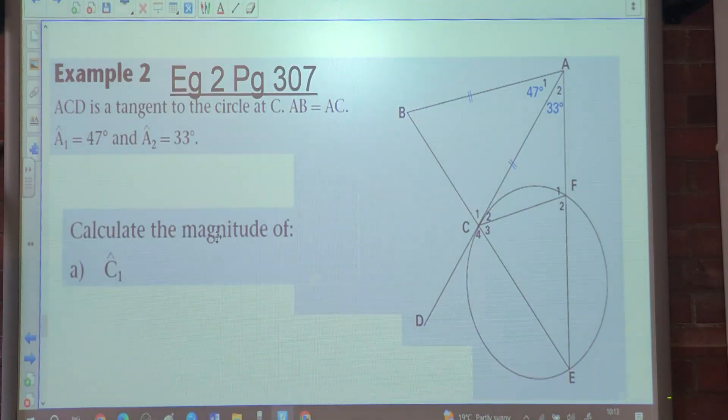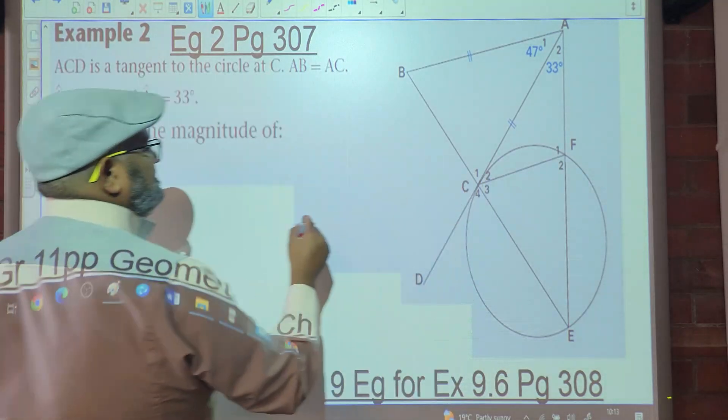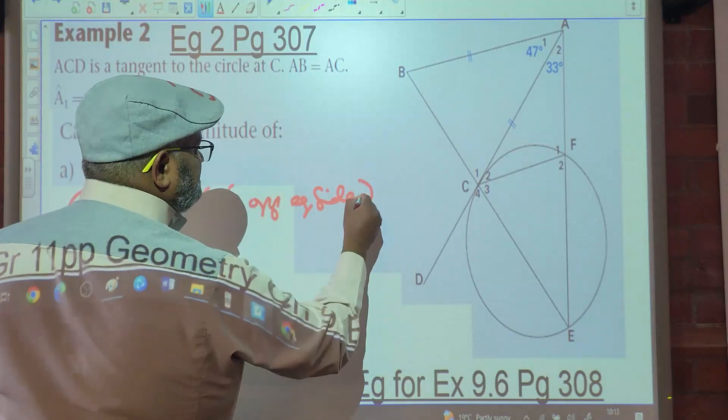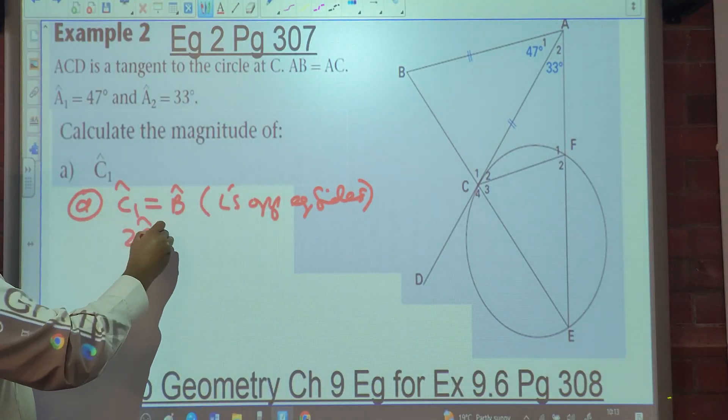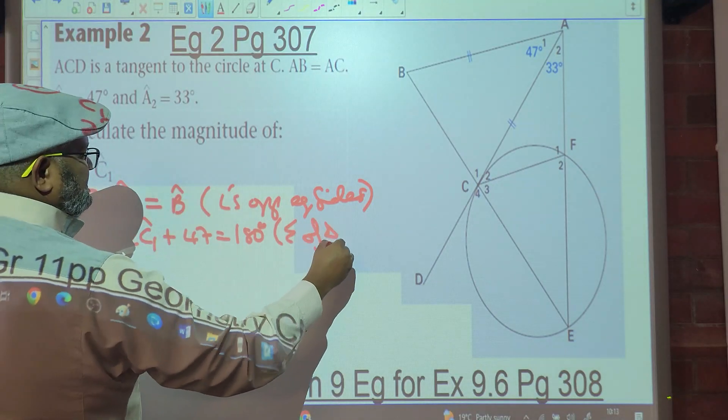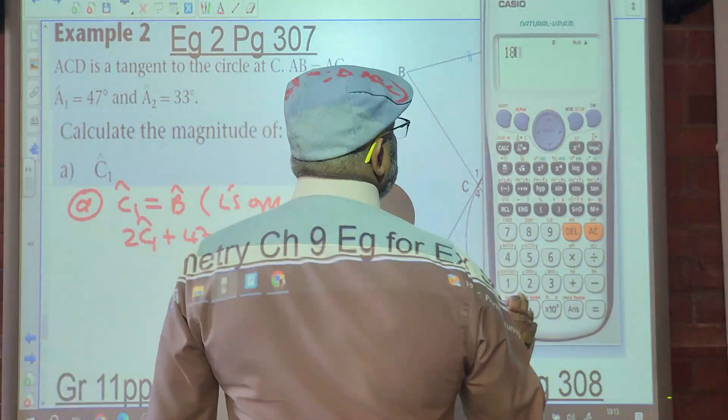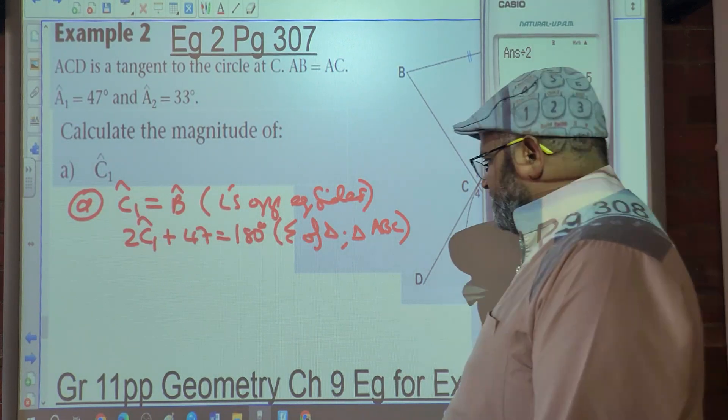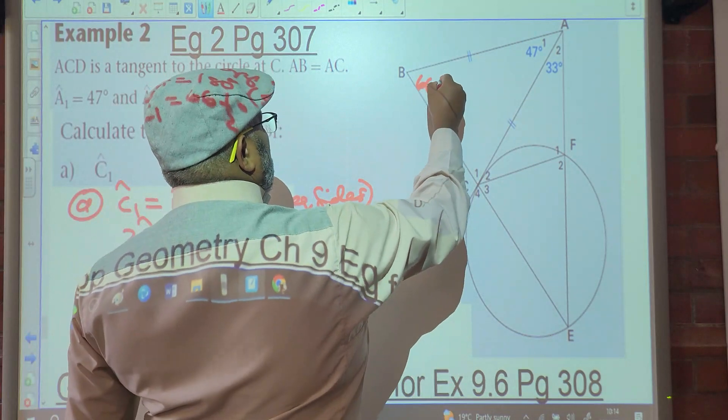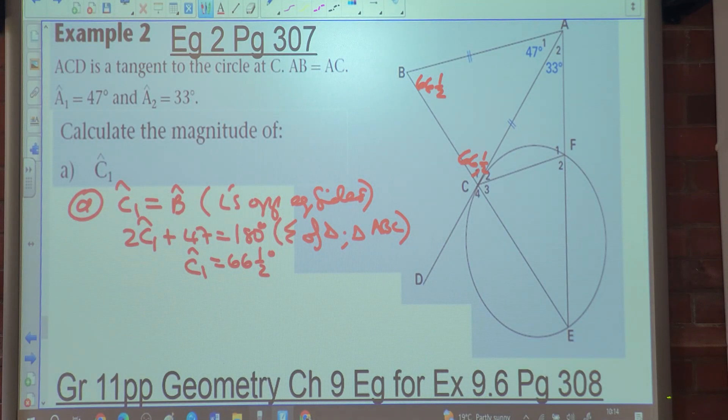Calculate the magnitude. People, what does magnitude mean? The size. Calculate the magnitude of angle C1. Let's look at C1. We spoke about C1 already. C1 is equal to angle B. Why? Angles opposite equal sides. So twice angle C1, or C1 plus B plus 47, is equal to 180. Why? Sum of triangles in triangle ABC. So we're going to say 180 minus 47 divided by 2 gives us 66.5. Angle C1 is equal to 66 and a half degrees. Are you all okay with that? Yes. All right.